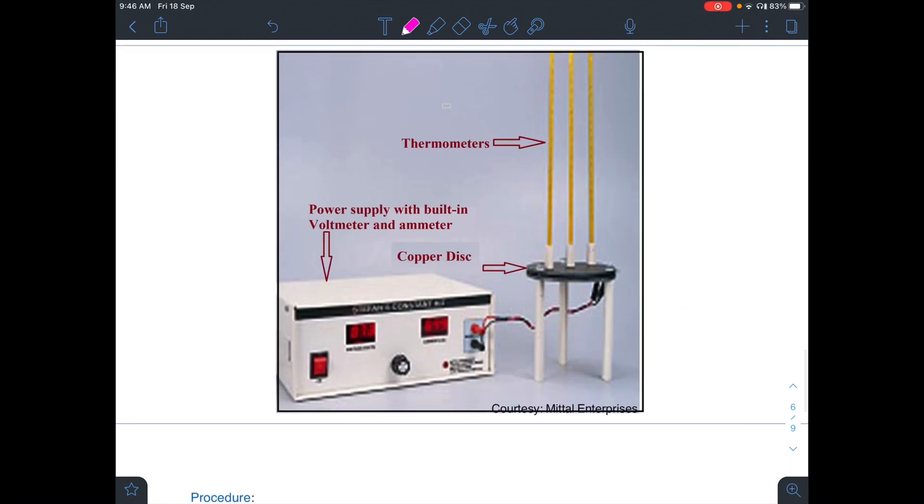This is the experimental setup. This is your copper disk and these are three thermometers used to record the temperature. This is your power supply and you will apply some voltage. When steady state is reached, the temperature will be maintained at a constant value. When temperature is constant in three thermometers, you will note the reading, corresponding value of current, and temperature.